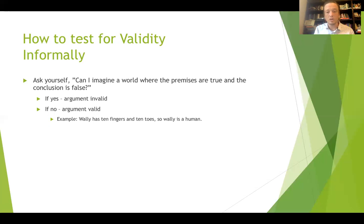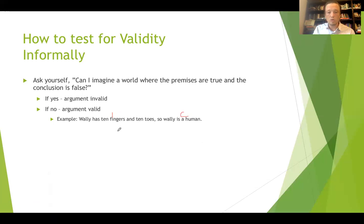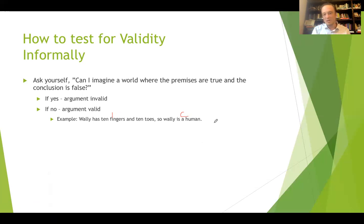So let's look at an example. Wally has 10 fingers and 10 toes, so Wally is a human. We've got one premise and one conclusion. Is this valid? No, of course not — because you can imagine a world where Wally is a dog and has 10 fingers and 10 toes. You can imagine a world where Wally has 10 fingers and 10 toes and is not a human. So it's an invalid argument.